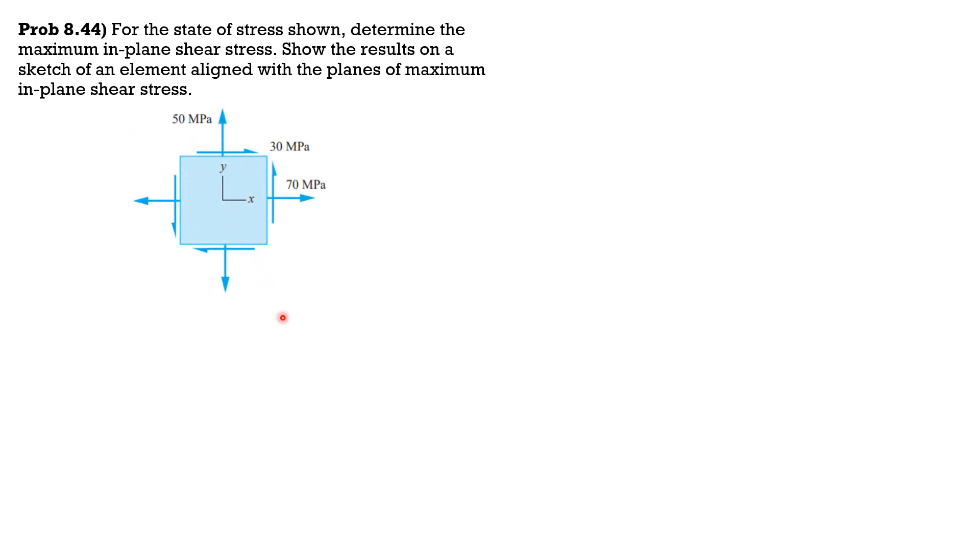So here is the figure. Sigma x is positive 70 megapascals, sigma y is positive 50 megapascals, and tau xy is also positive 30 megapascals.